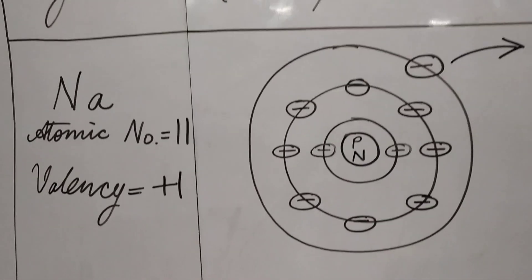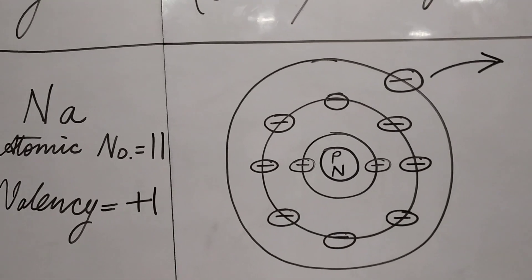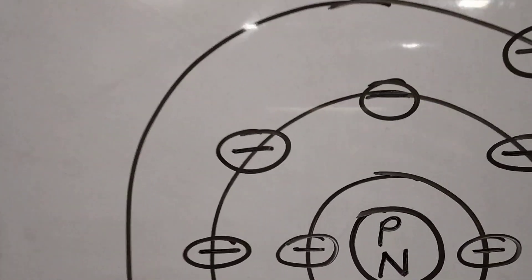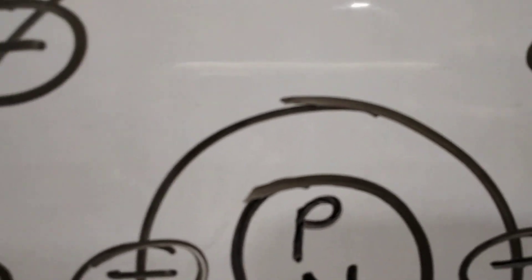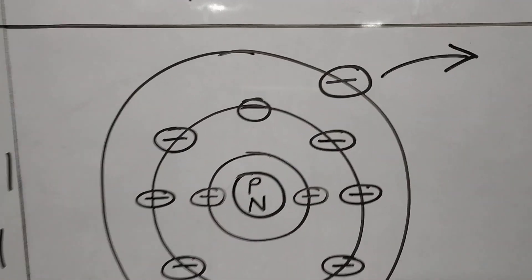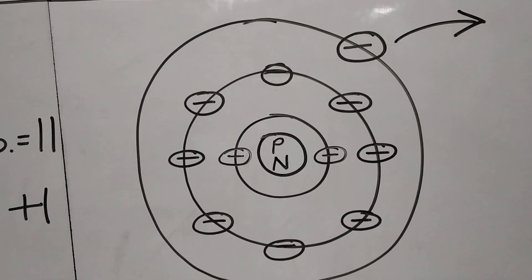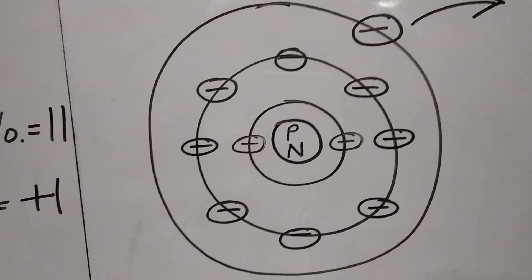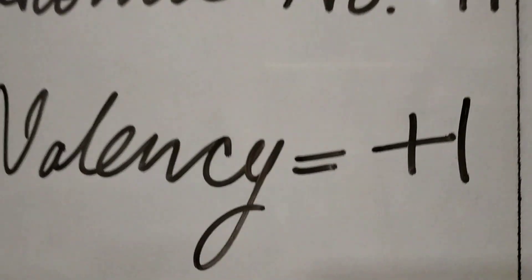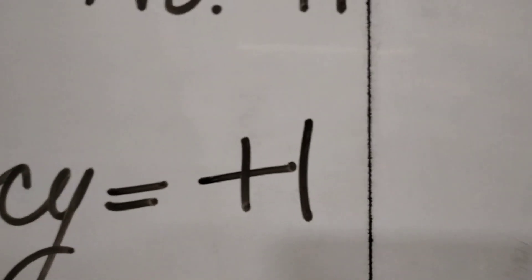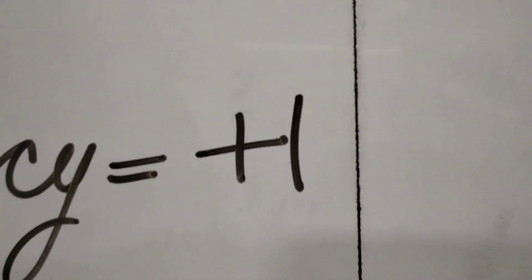When it loses one electron, the number of protons increases in the atom within the nucleus. So when it loses an electron and becomes an ion, the charge on the atom as a whole is plus 1 because it has lost one electron. So one proton is in excess.